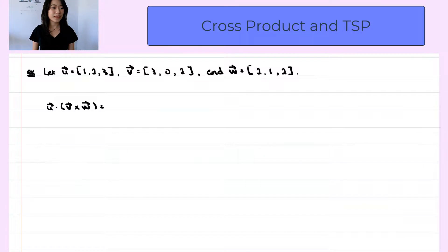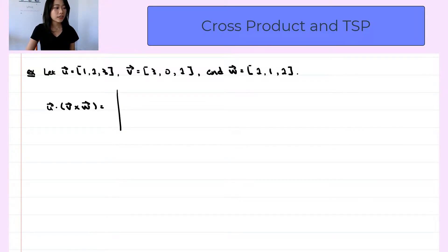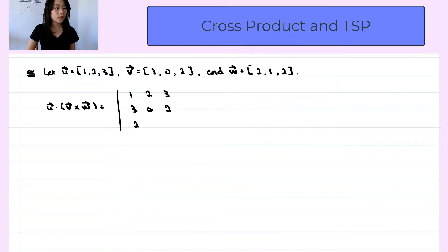Let's look at this example. Three vectors are given, and we want to find u dot v cross w. So we can use the determinant notation. First row, I put the components of u: 1, 2, and 3. Second row, I put the components of v: 3, 0, and 2. And the third row, I put the components of w: 2, 1, and 2.